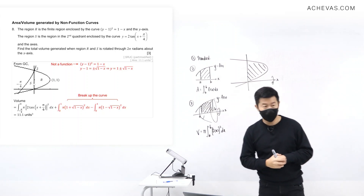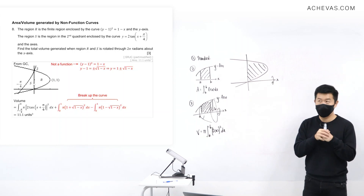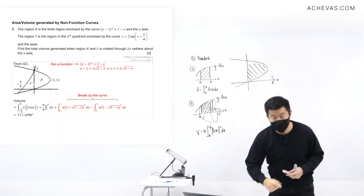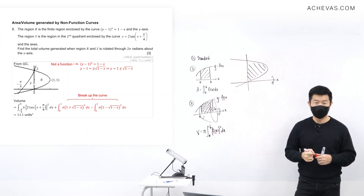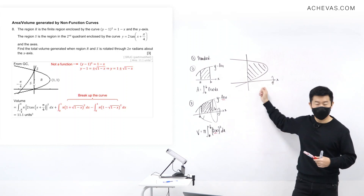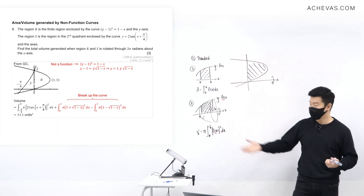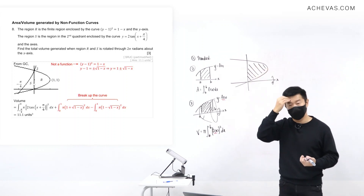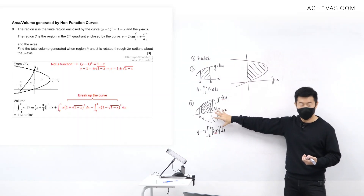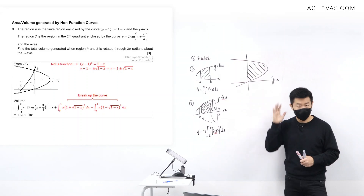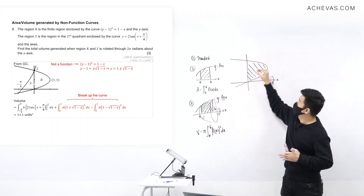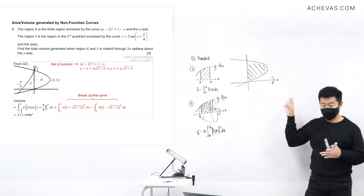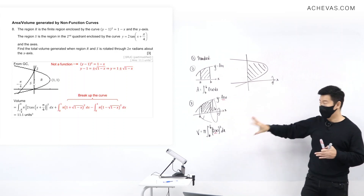Let me discuss why region R doesn't work. In order to use this formula you need the curve to be a function. What is a function? When you draw the graph, it must pass the vertical line test. This region does not — a vertical line cuts it at more than one point, so it is not a function. Because of that, there is no formula I can directly apply.